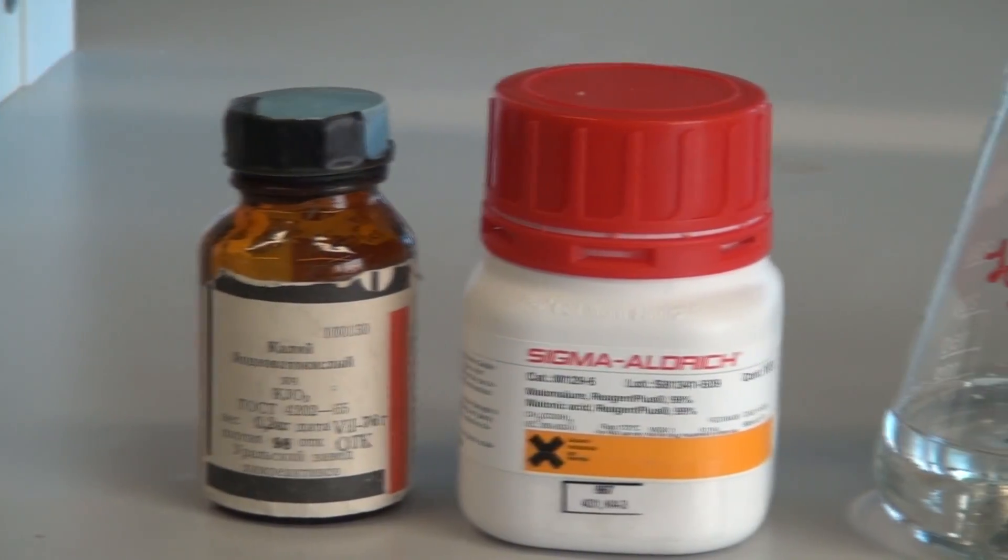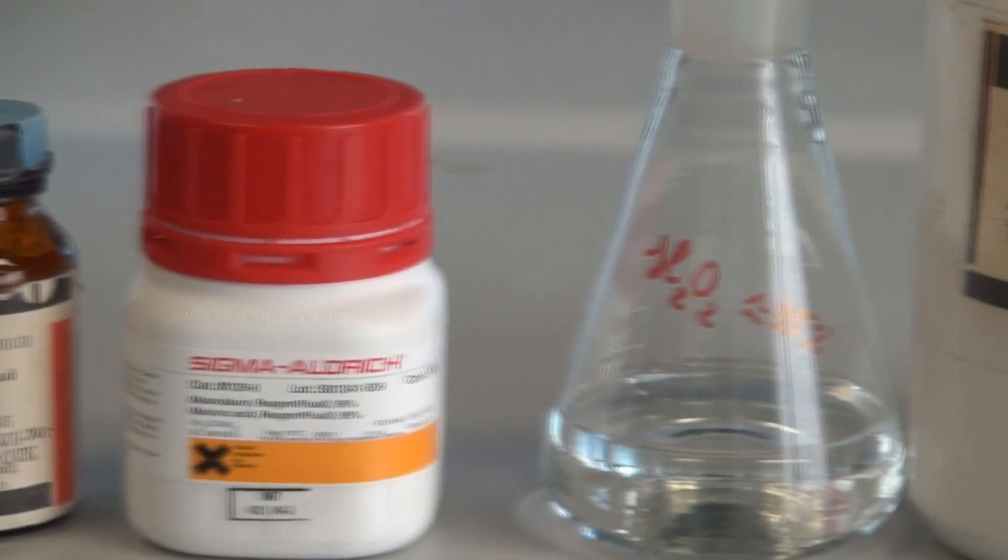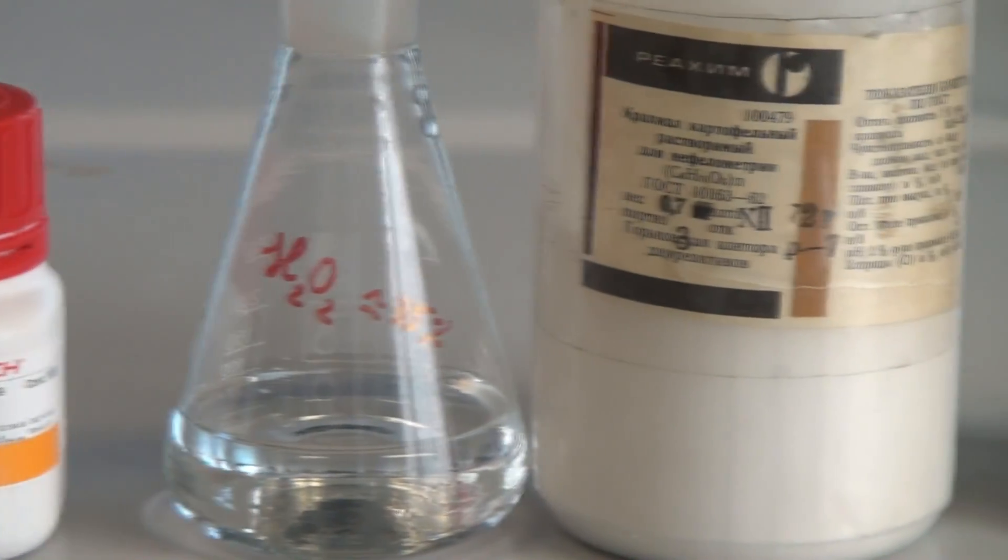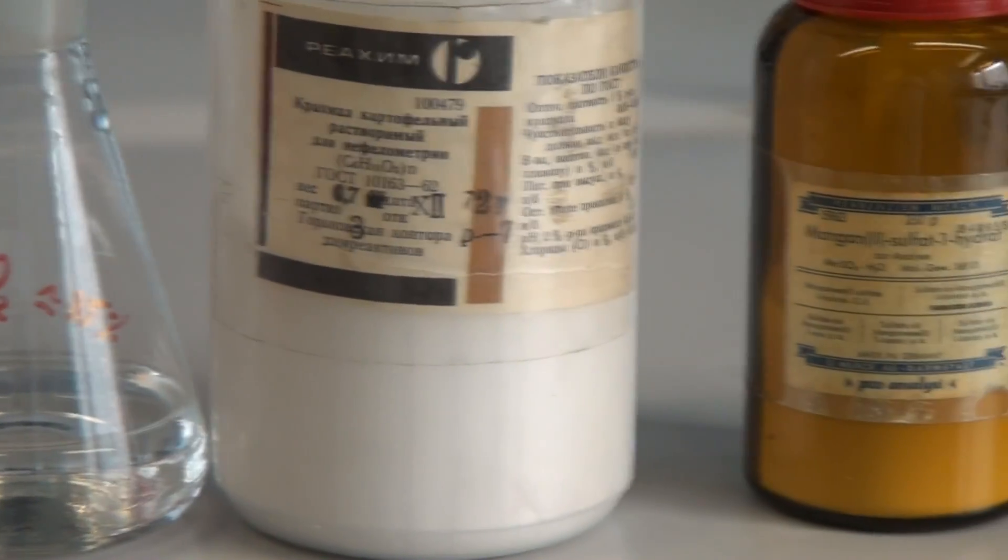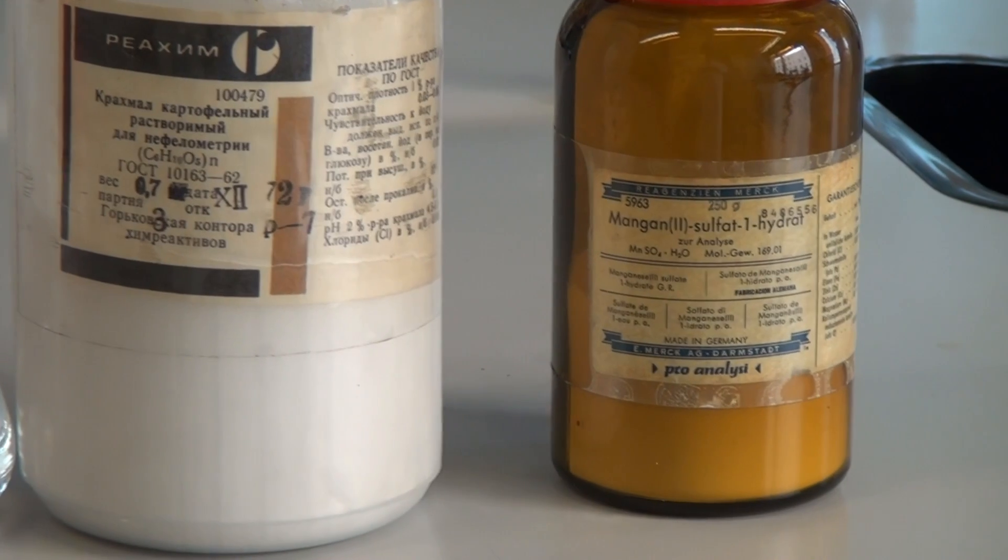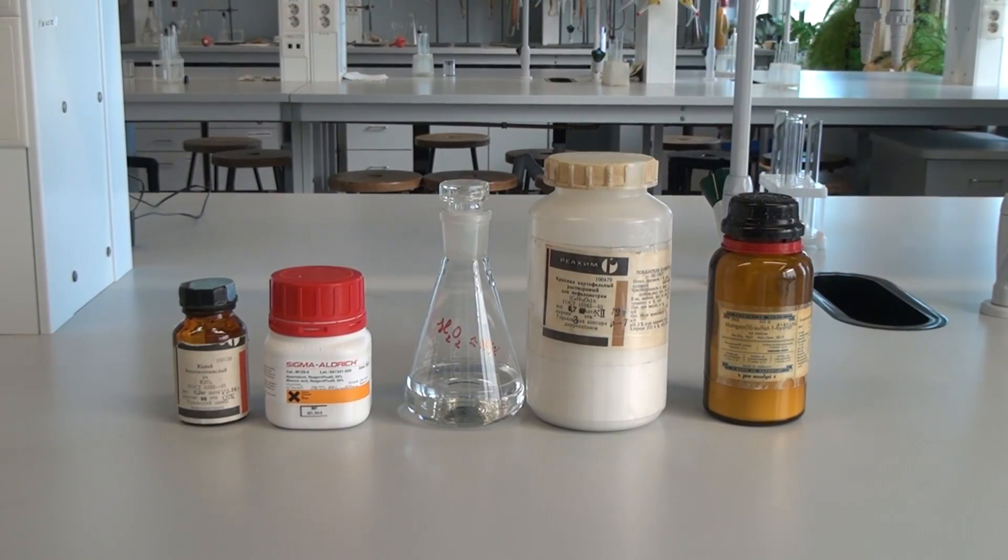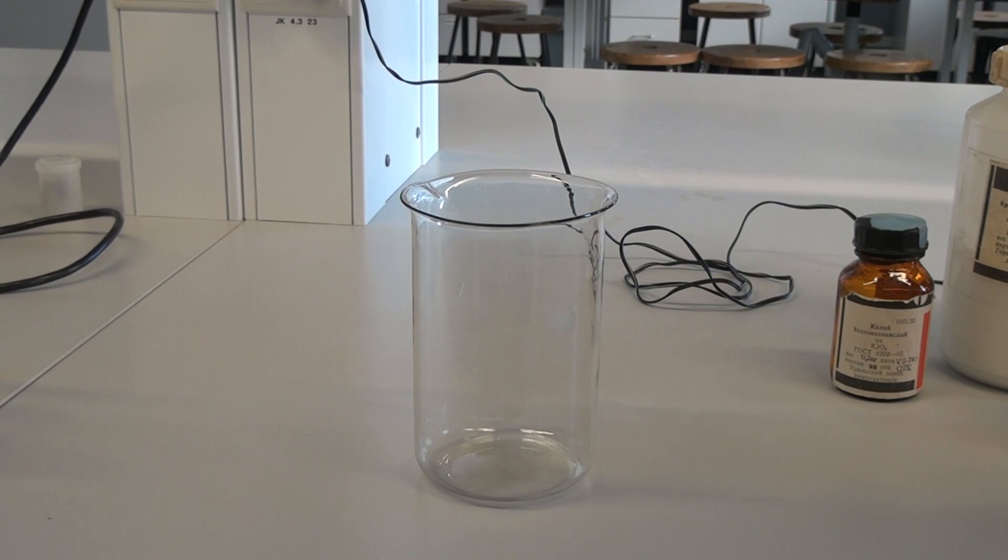For this experiment we will need potassium iodate, malonic acid, 30% hydrogen peroxide, potato starch, and manganese sulfate. To conduct this reaction, we'll have to prepare three solutions in advance.